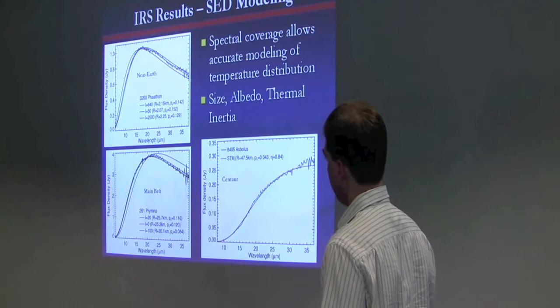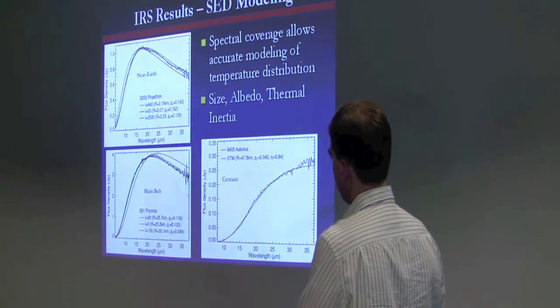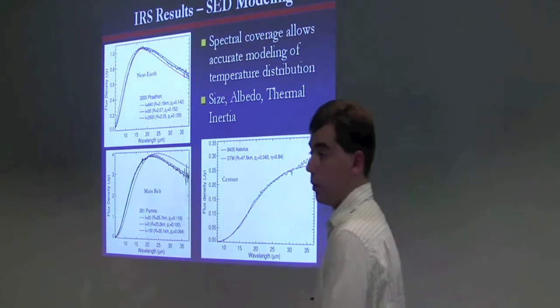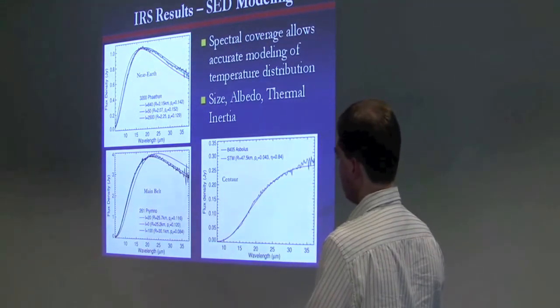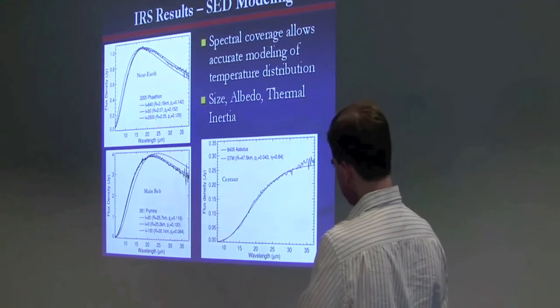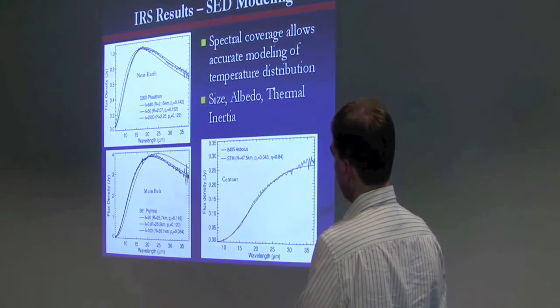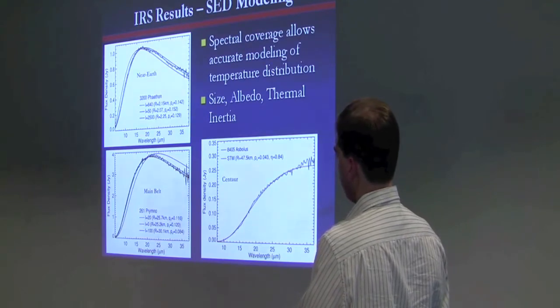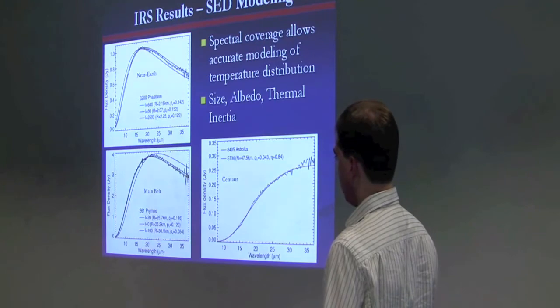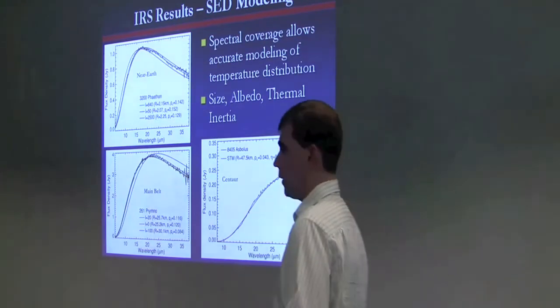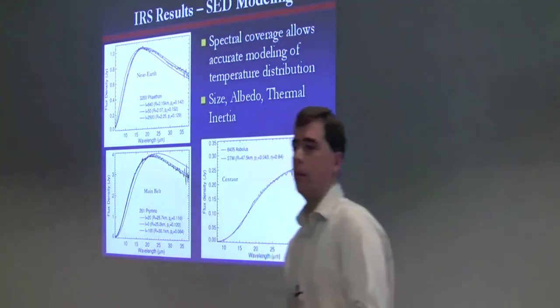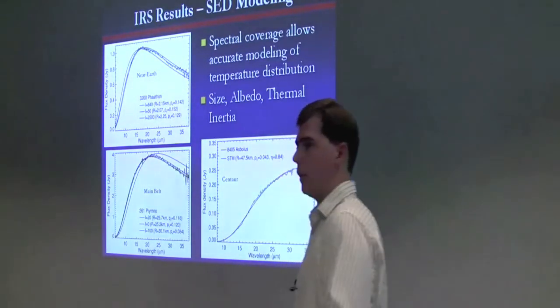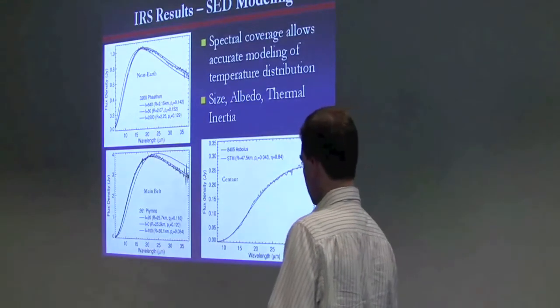For instance, this near Earth asteroid Phaethon, this red curve is the best fit thermal model assuming a lunar-like thermal inertia of 50 SI units. But that doesn't fit the data at all. Phaethon is best fit with thermal inertia of about 640. Bare Rock has a thermal inertia of about 2500. So this implies maybe for this near Earth asteroid, maybe a blocky surface, or at least a surface with larger grains than the fine lunar regolith.